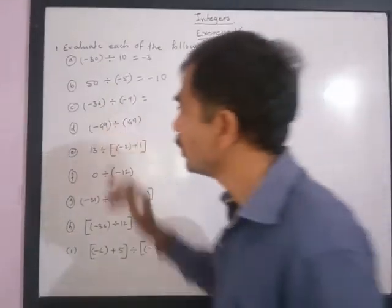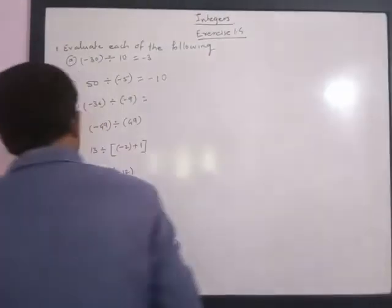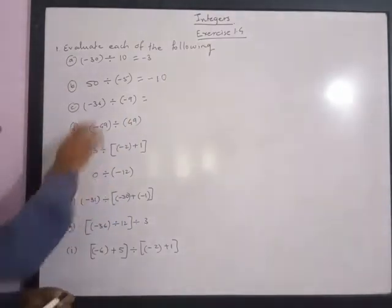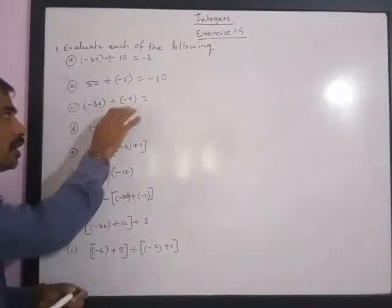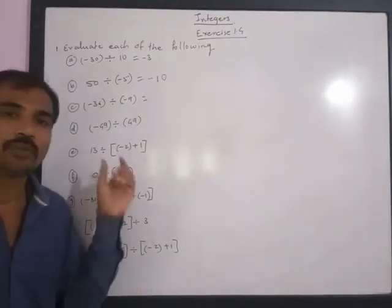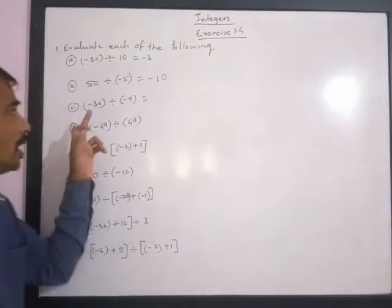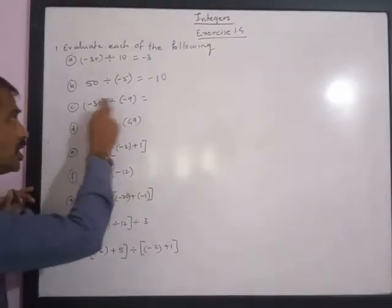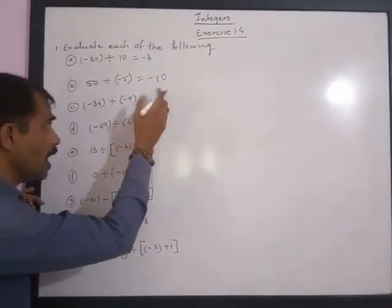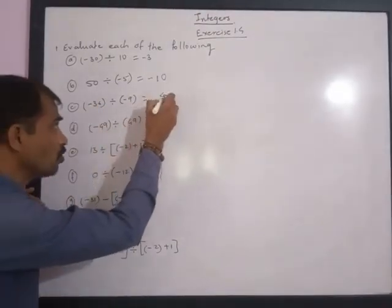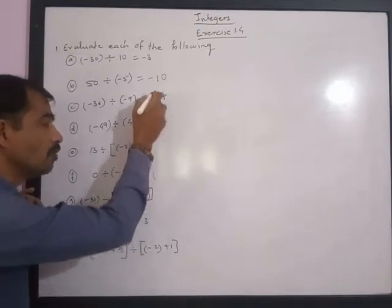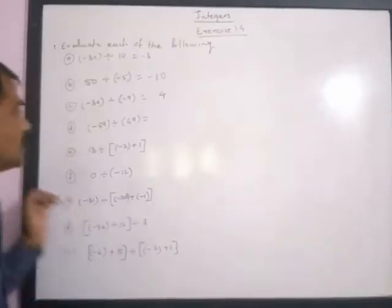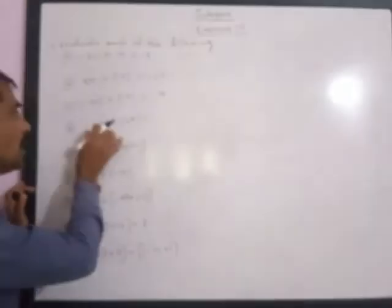Next, if a negative integer is divided by a negative integer, we divide the whole number by the whole number and give a positive sign. So 36 divided by 9 is 4, and we give a positive sign. Even if you don't write the positive sign, it is considered positive.